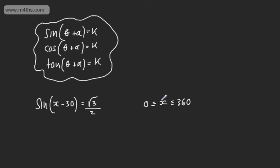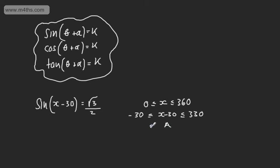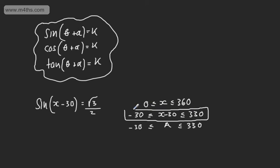This is the interval for x, but we have x minus 30. At this stage we can write x minus 30, and subtracting 30 from each part of the inequality, we'd have minus 30 to 330. This is one way to do it — we're going to solve for x minus 30 in this interval. Alternatively, you can let x minus 30 equal a and solve for a between minus 30 and 330.